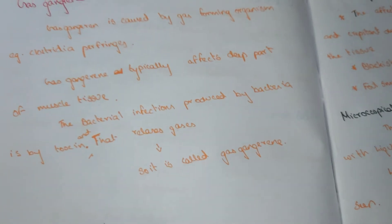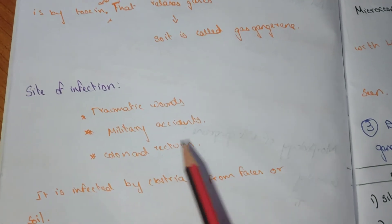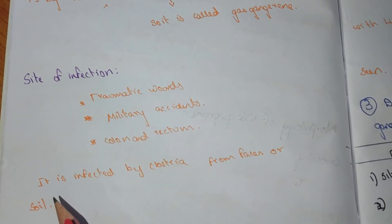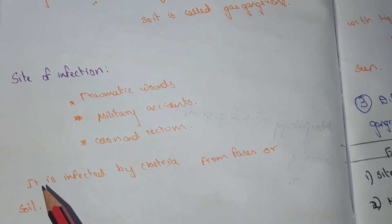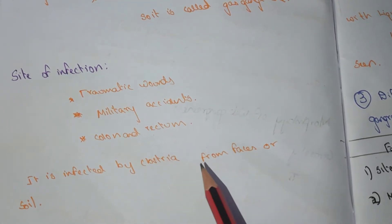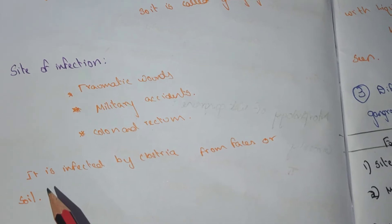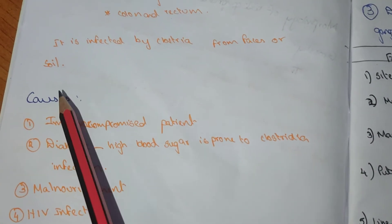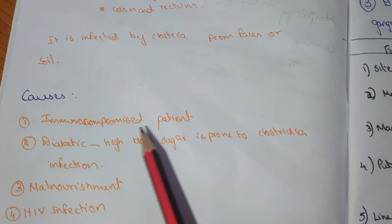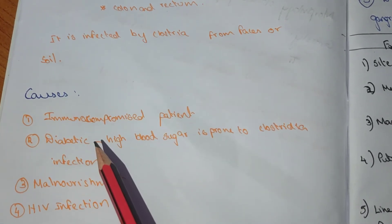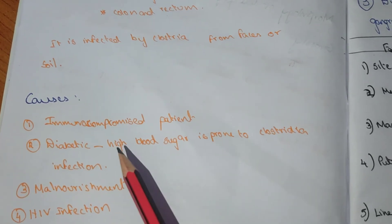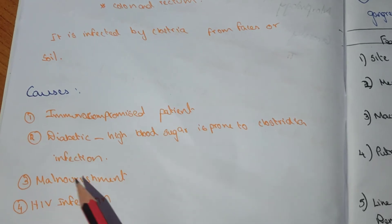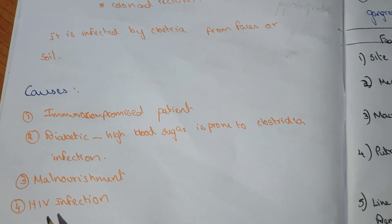Sites of gas gangrene infection include traumatic wounds, military accidents, colon, and rectum, often infected by Clostridium from feces or soil. It primarily affects immunocompromised patients, diabetic patients due to high blood sugar, malnourished individuals, and those with HIV infection.